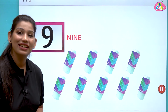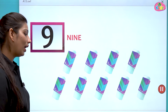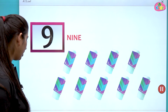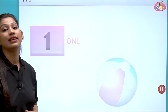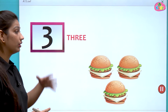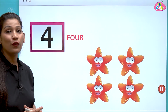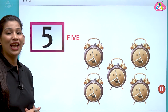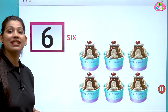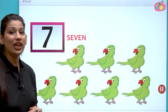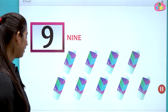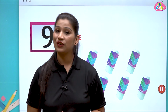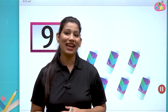Let us revise all the numbers of this session in one go. Number one — O-N-E. Number two — T-W-O. Number three — T-H-R-E-E. Number four — F-O-U-R. Number five — F-I-V-E. Number six — S-I-X. Number seven — S-E-V-E-N. Number eight — E-I-G-H-T. Number nine — N-I-N-E. That's all for today's concept of counting 1 to 9. Count the objects around you and tell the number from 1 to 9!